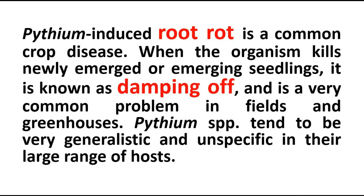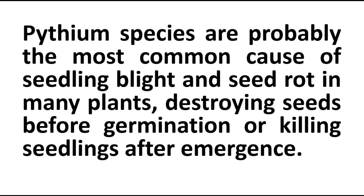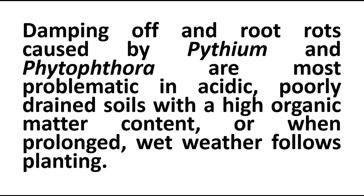Pythium causes a number of plant diseases. The two common diseases caused by Pythium are root rot and damping off. In case of root rot, the roots of the plants are rotten and they kill the plant. When an organism kills a newly emerged or emerging seedling, it is known as damping off. Damping off is a very common disease in greenhouse plants and crop plants. Pythium species are probably the most common cause of seedling blight and seed rot, destroying seeds before germination or killing seedlings after emergence. Damping off and root rot are also caused by another fungus called Phytophthora.